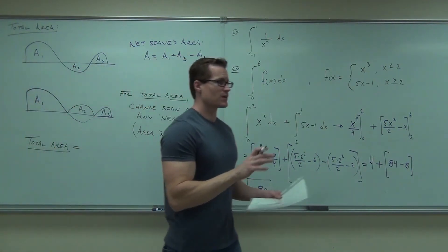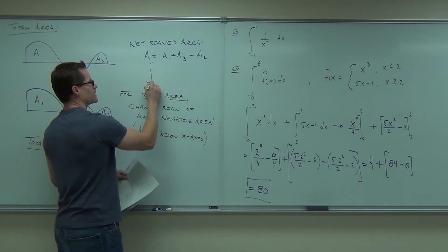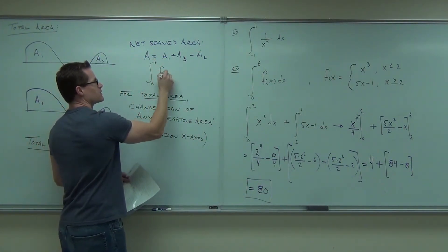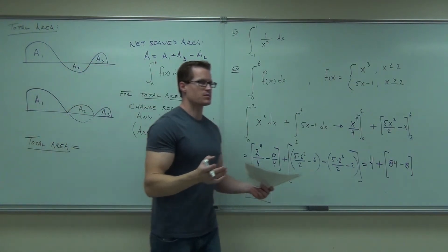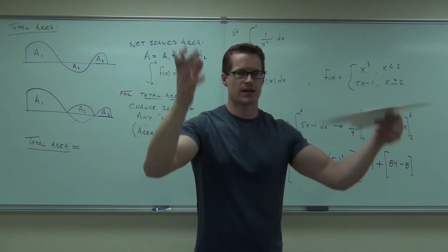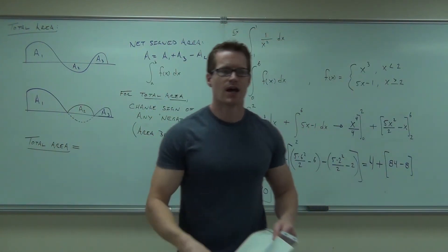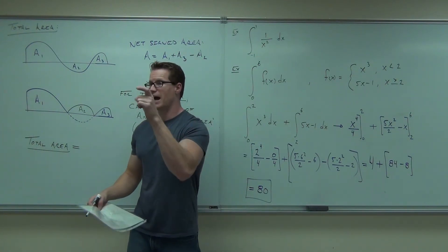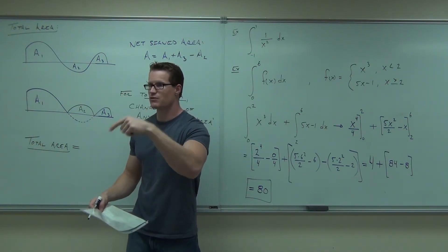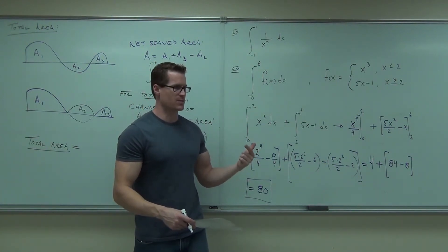Okay. Now check it out. Here is net signed area. Net signed area said you start at A, you go to B. You just take the integral of whatever function you have, and whatever happens, happens. Positive area means most of it's above the x-axis. Negative area means most of it's below the x-axis. Even if we cross over, it just basically says your net change. What is mostly happening? Whether you have more positive than negative or more negative than positive, no matter what it actually is on your graph. Does that make sense to you?